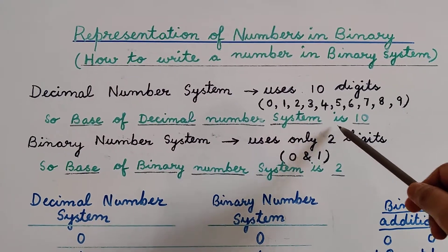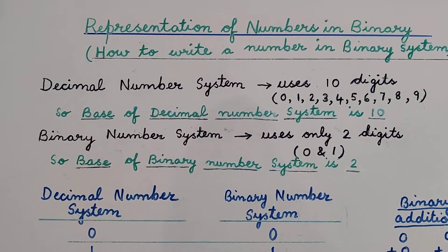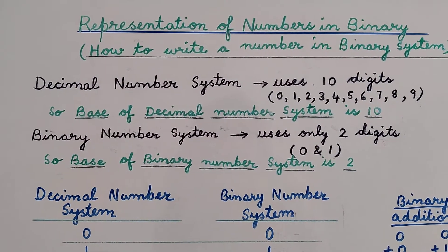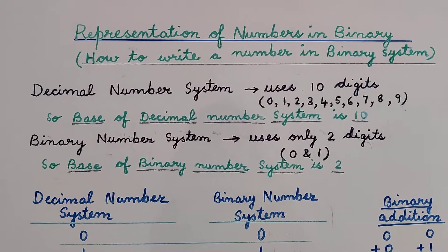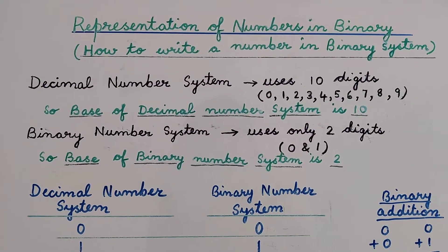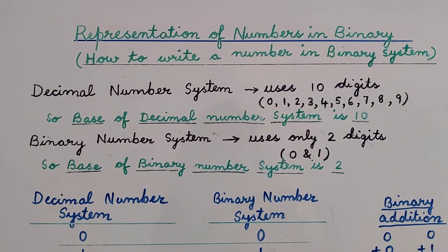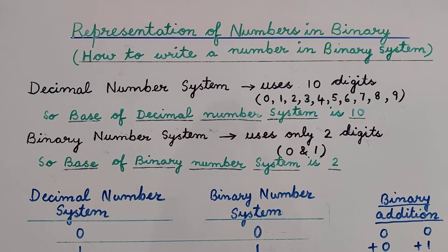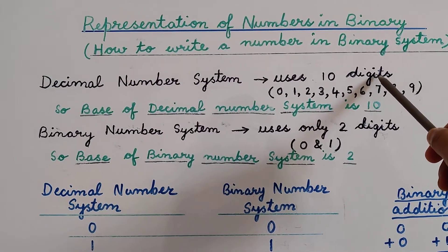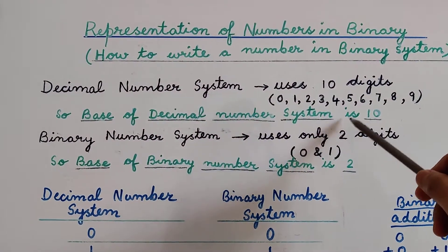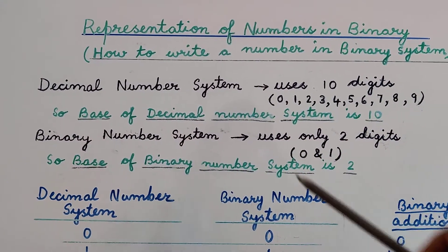The base of a decimal number system is 10. The question arises: what do we mean by the base of a number system? The number of digits used to represent any number system is called its base. In the decimal number system, 10 digits are used, so the base of the decimal number system is 10.